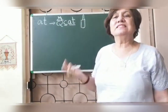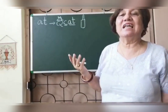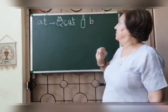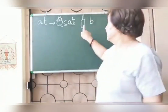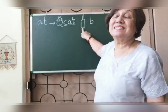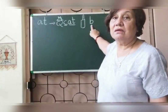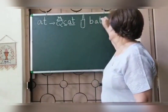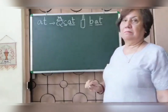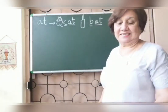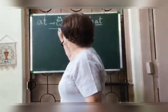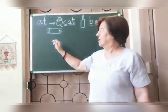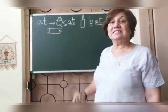Now what have I drawn? You will say: you have drawn a bat. What does 'bat' begin with? Which alphabet? B says 'burr.' And how do I pronounce this picture? Bat. Burr and 'at.' So what will I write after burr? A-T. So what does it become? B-A-T, bat. I've drawn the third picture. What picture is this?